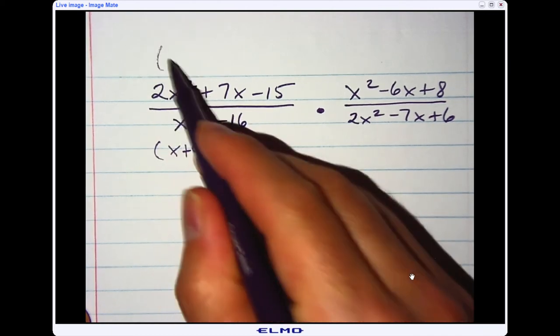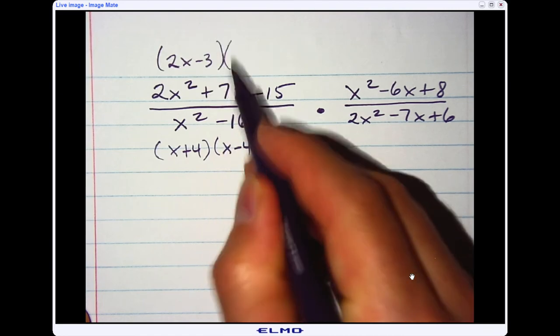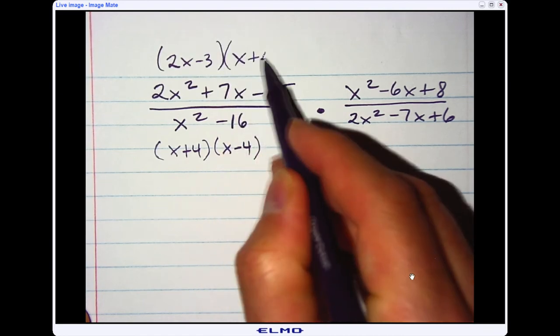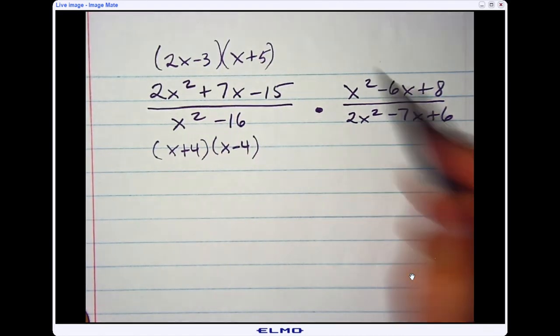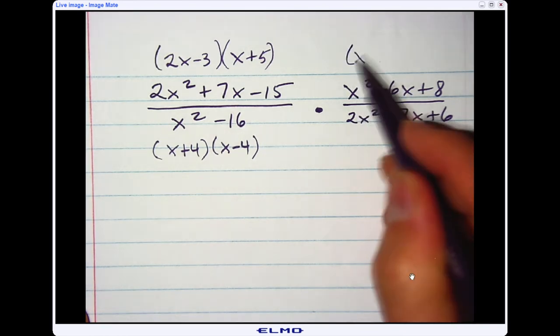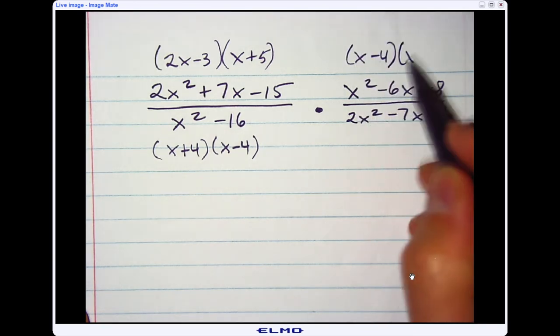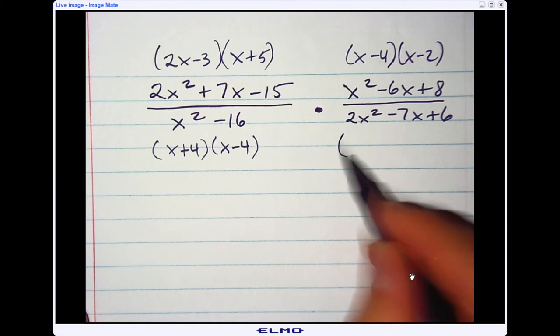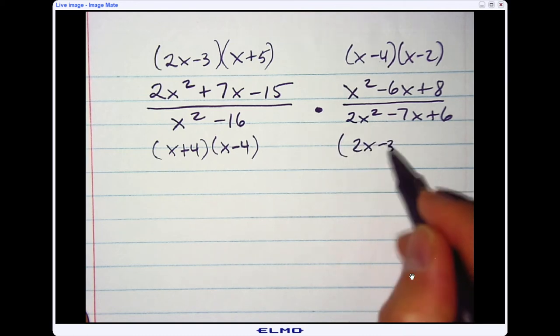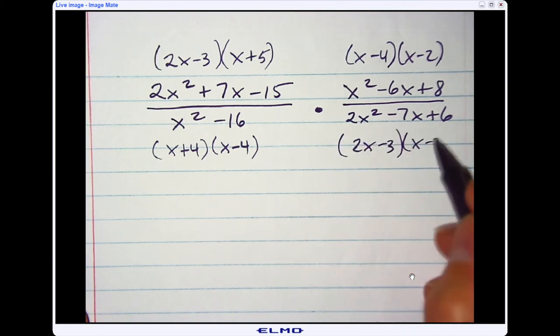On the top here, this would factor to 2x minus 3 and x plus 5. This top one would be x minus 4 and x minus 2. And on the bottom, I would have 2x minus 3 and x minus 2.